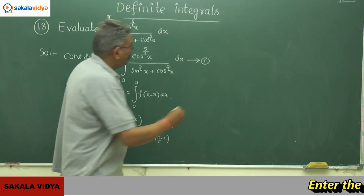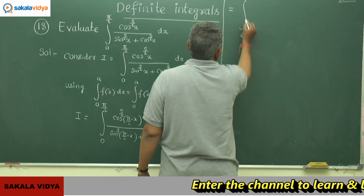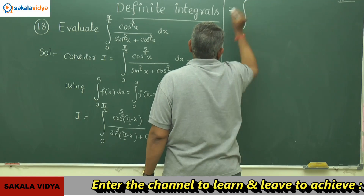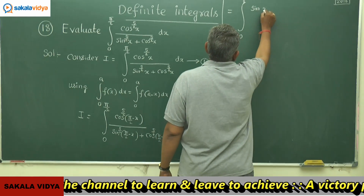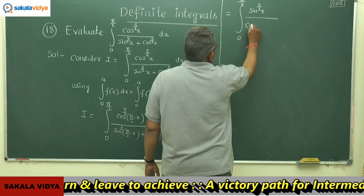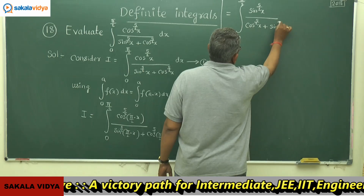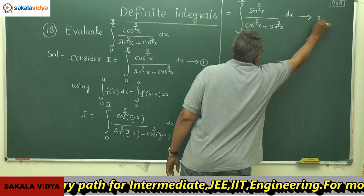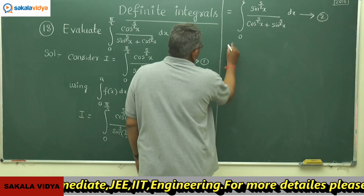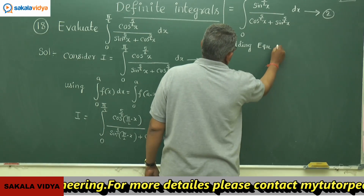Applying those formulae, we get: I equals the integral from 0 to π/2 of sin^(5/2)(x) divided by [cos^(5/2)(x) + sin^(5/2)(x)] dx. Call this equation 2. Now, adding equation 1 and equation 2.